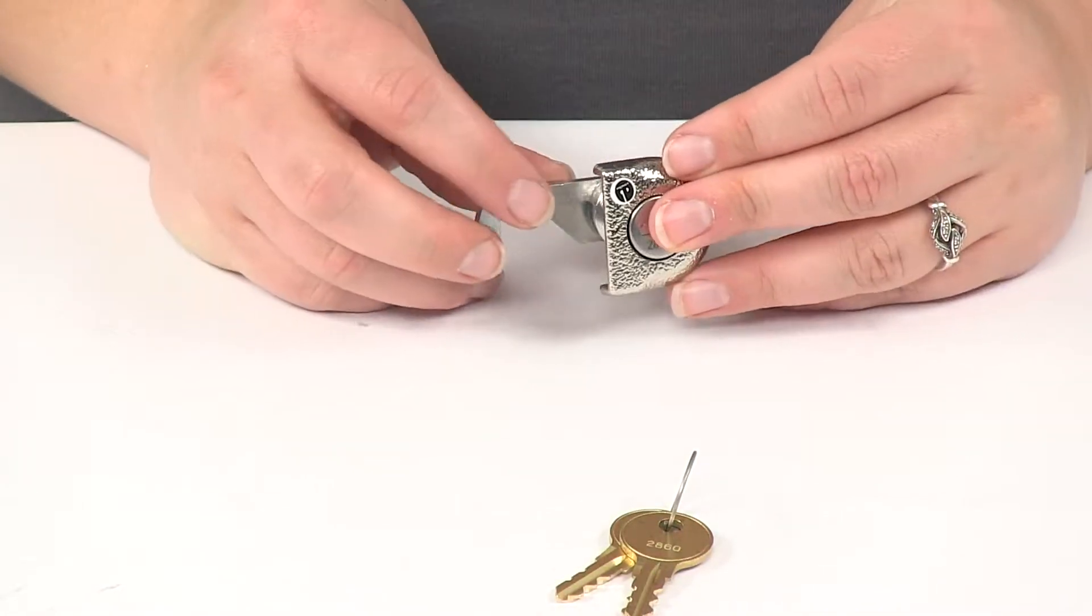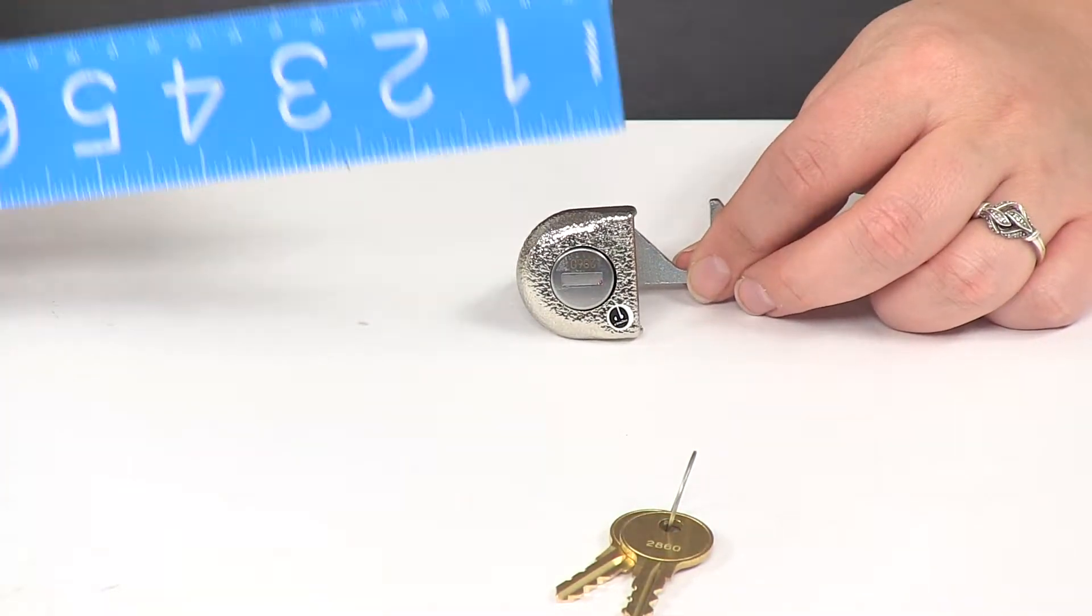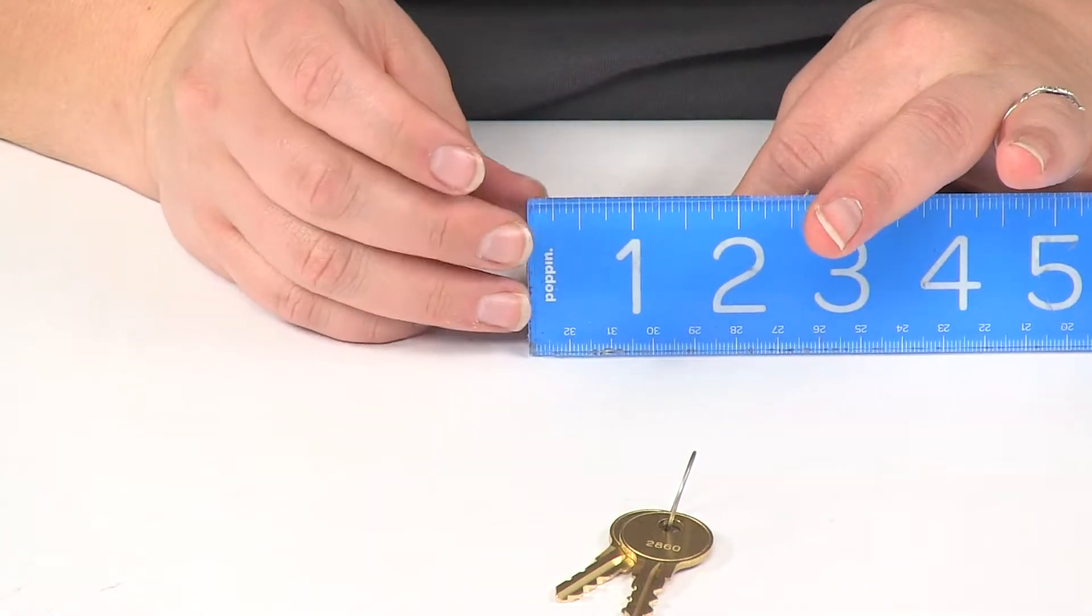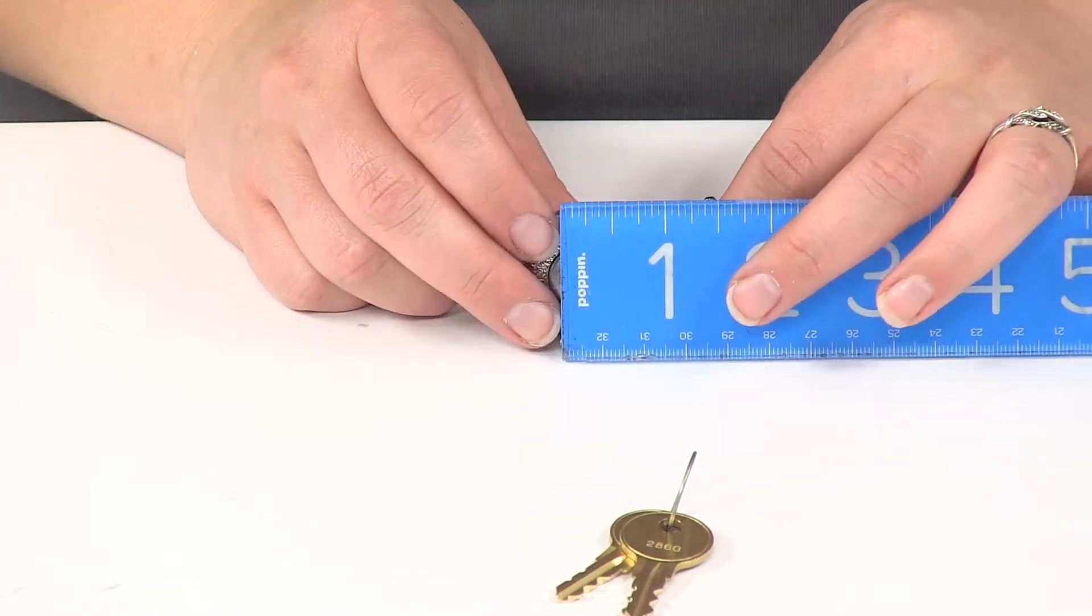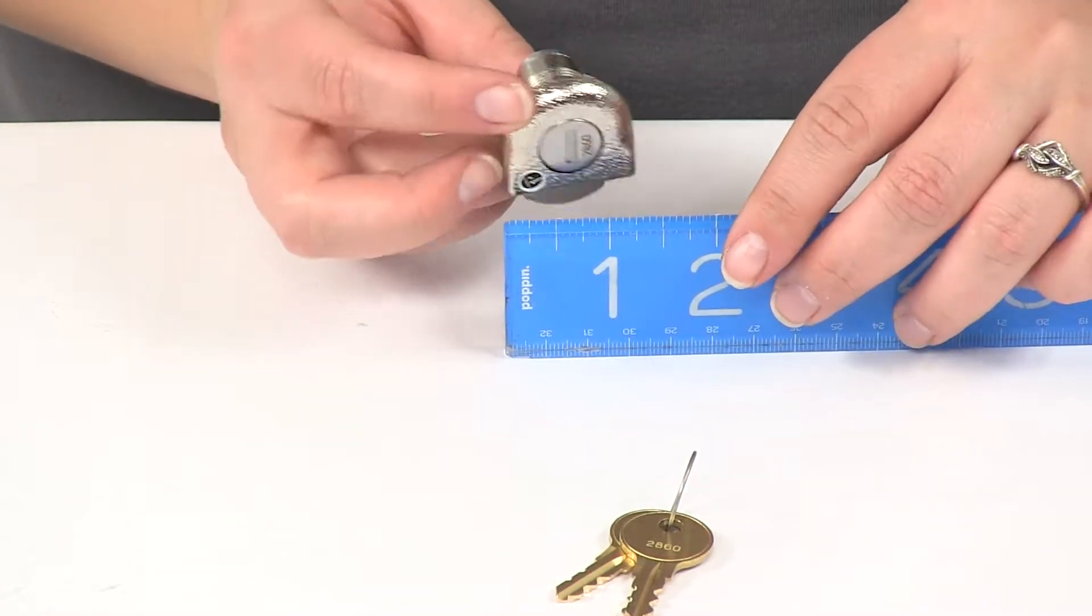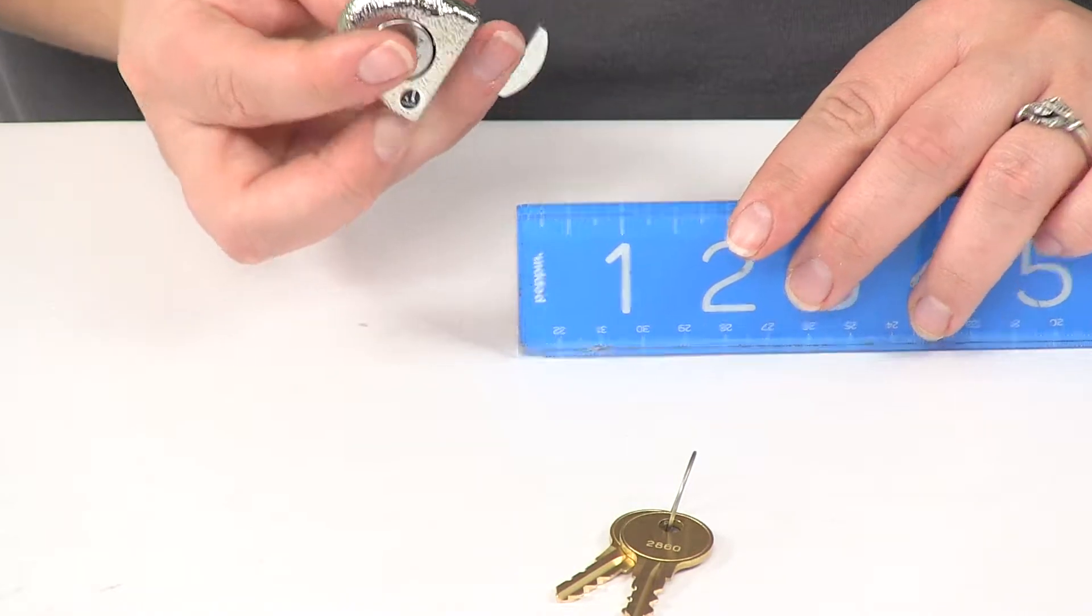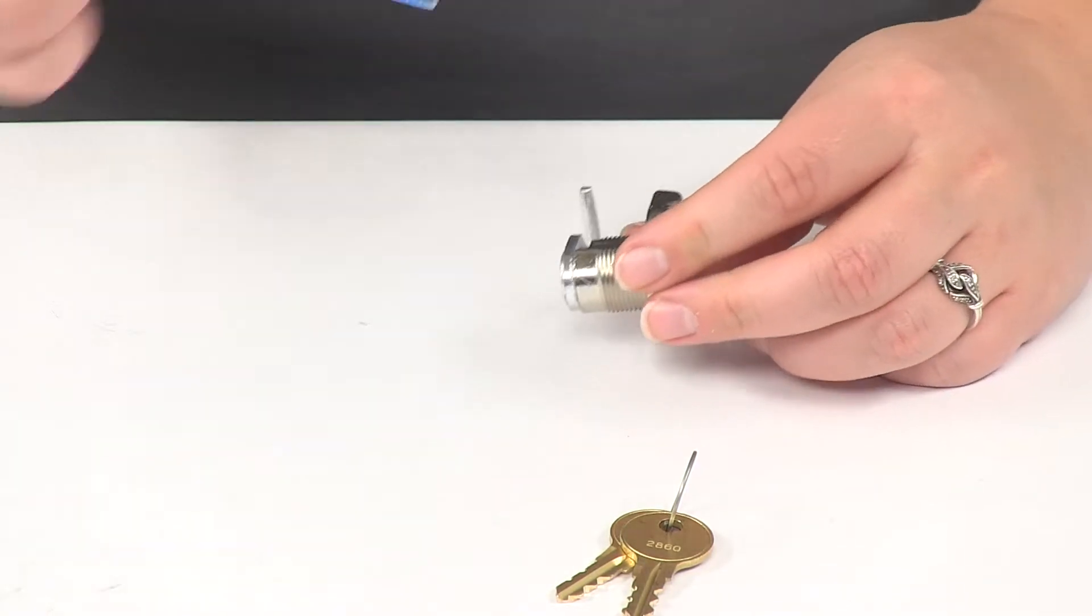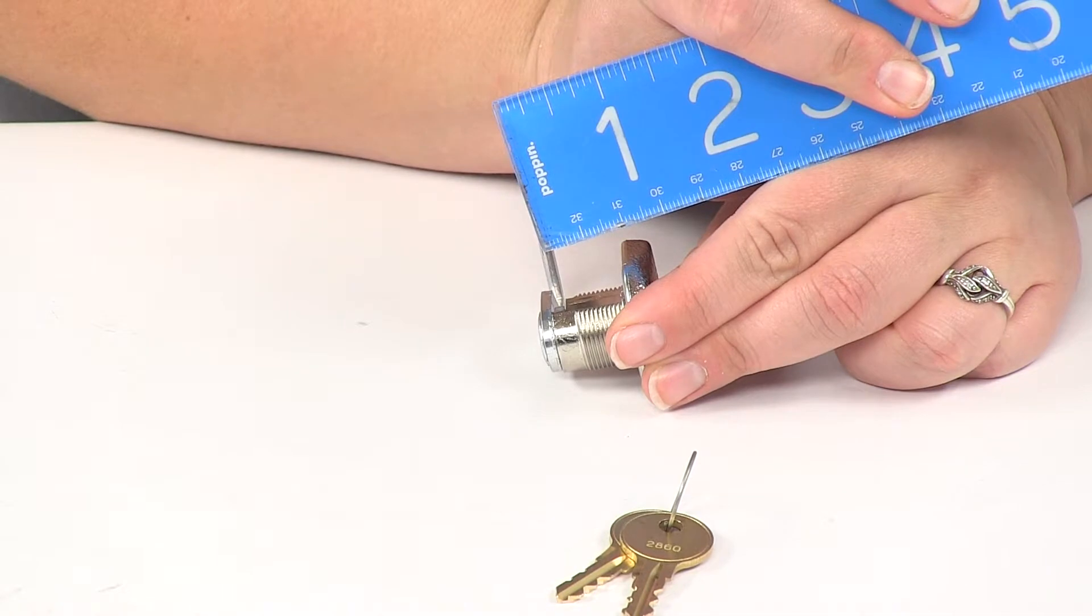Now as far as some measurements of this lock core, the face of it is going to measure just about an inch and a quarter tall by about an inch and a quarter wide. And that threaded portion is going to be about three quarters of an inch.